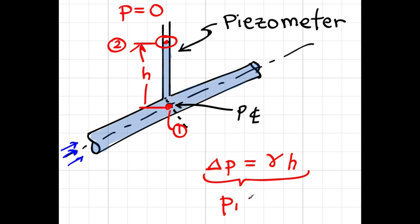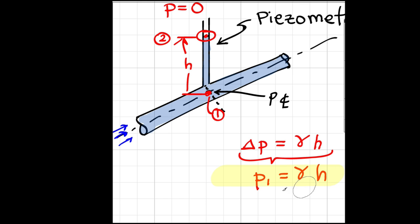which is the pressure at the center line of the pipe, is the specific weight of the liquid times the elevation difference between the center line of the pipe and the upper water level in the piezometer. So this equation is what we use when we have a piezometer to calculate the pressure.